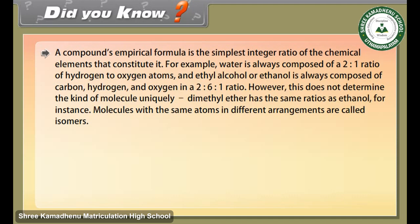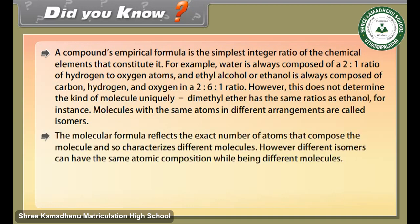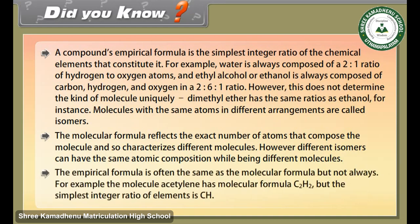Molecules with the same atoms in different arrangements are called isomers. The molecular formula reflects the exact number of atoms that compose the molecule and so characterizes different molecules. However, different isomers can have the same atomic composition while being different molecules. The empirical formula is often the same as the molecular formula but not always — for example, acetylene has molecular formula C₂H₂, but the simplest integer ratio of elements is CH.